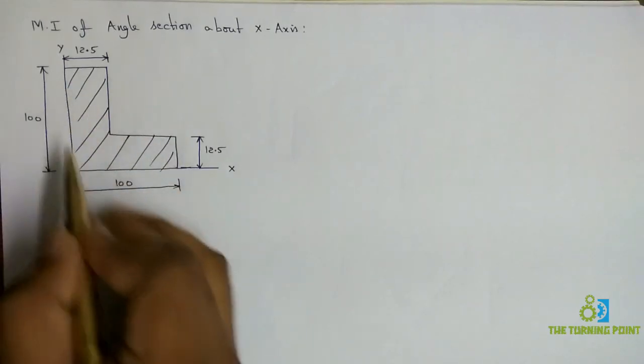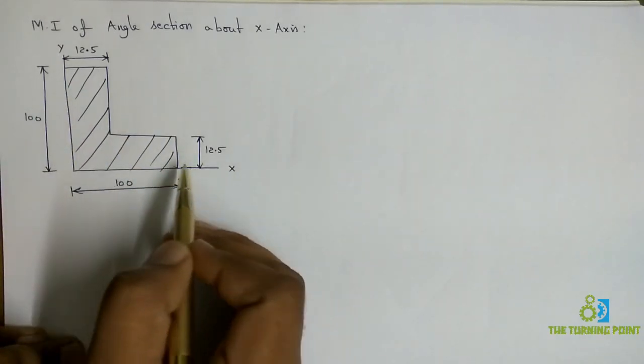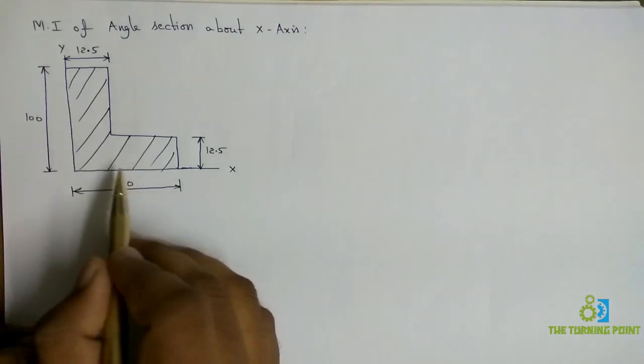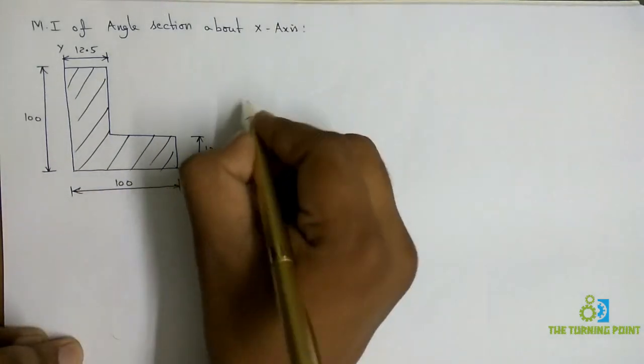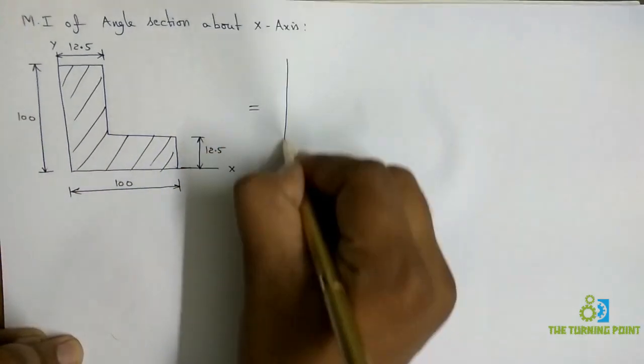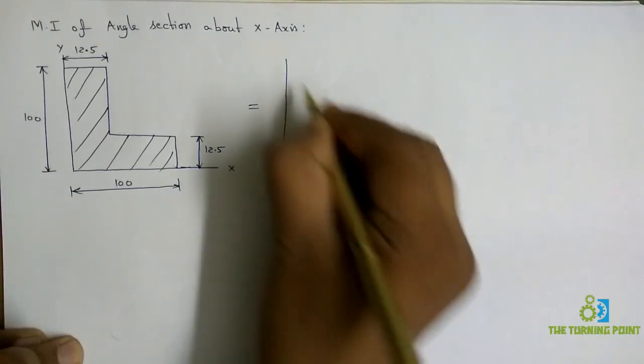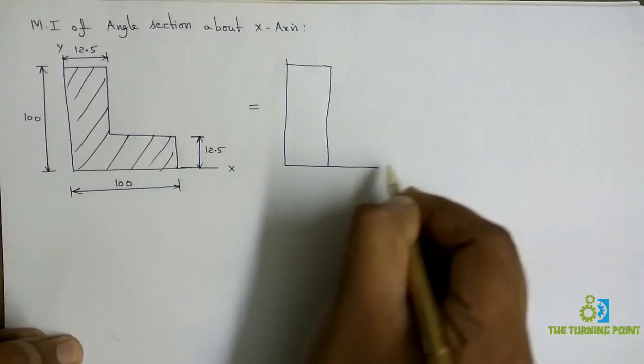This is the angle section. All the units are in millimeters. If you observe, it is a combination of two basic geometries, which are two rectangles. This is the first rectangle,